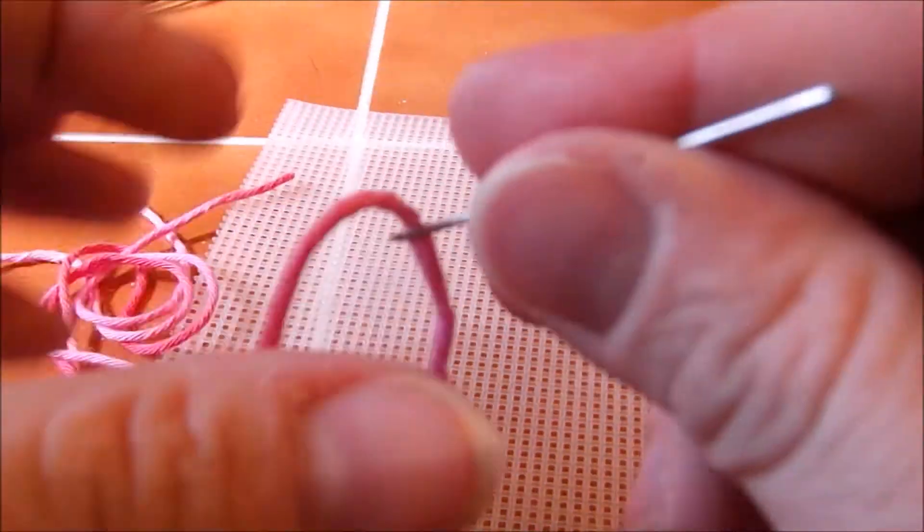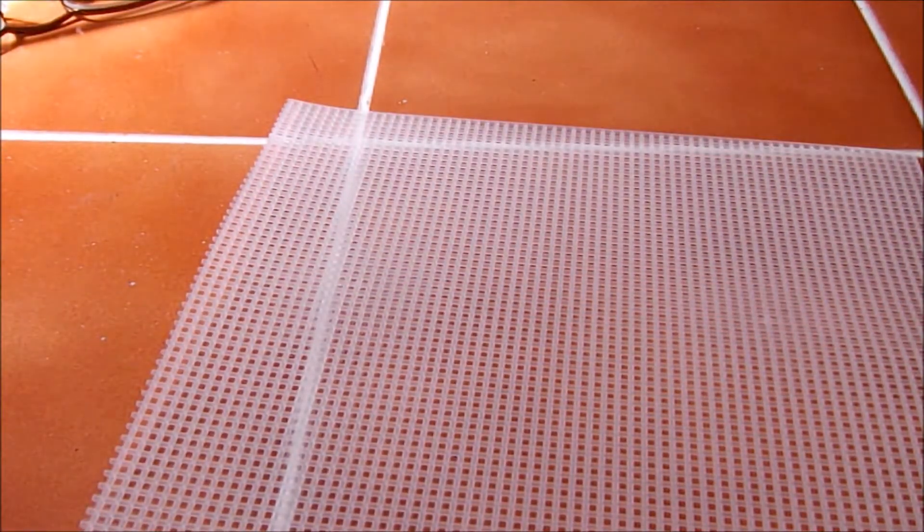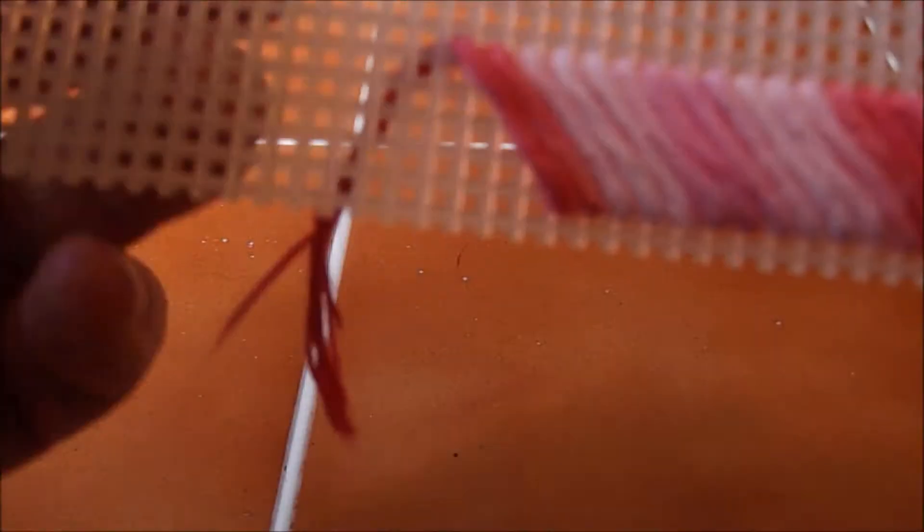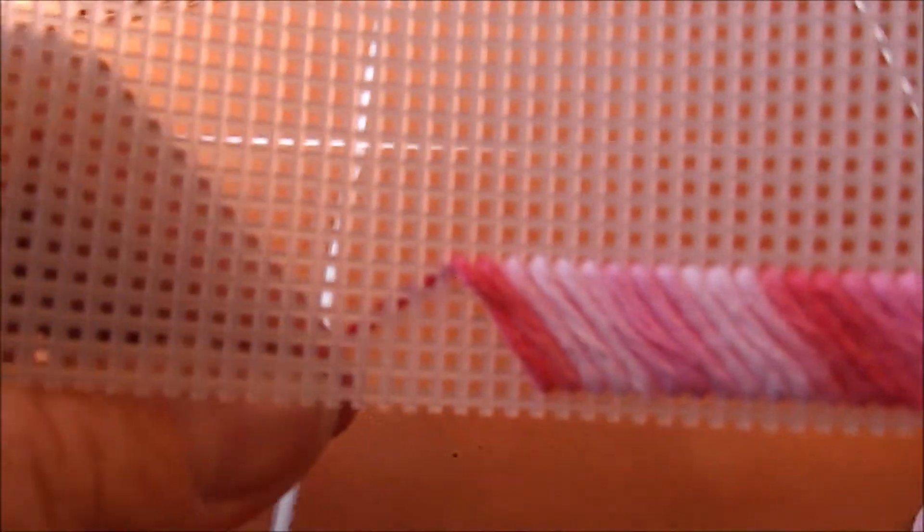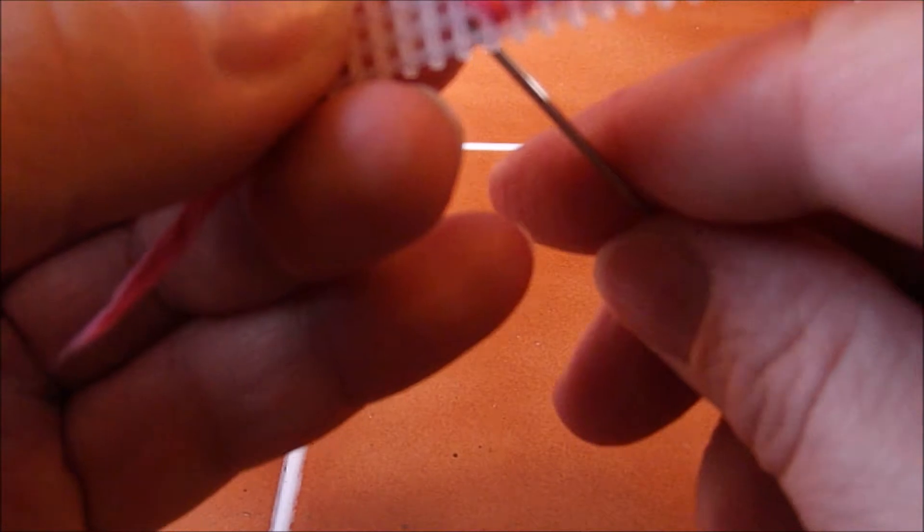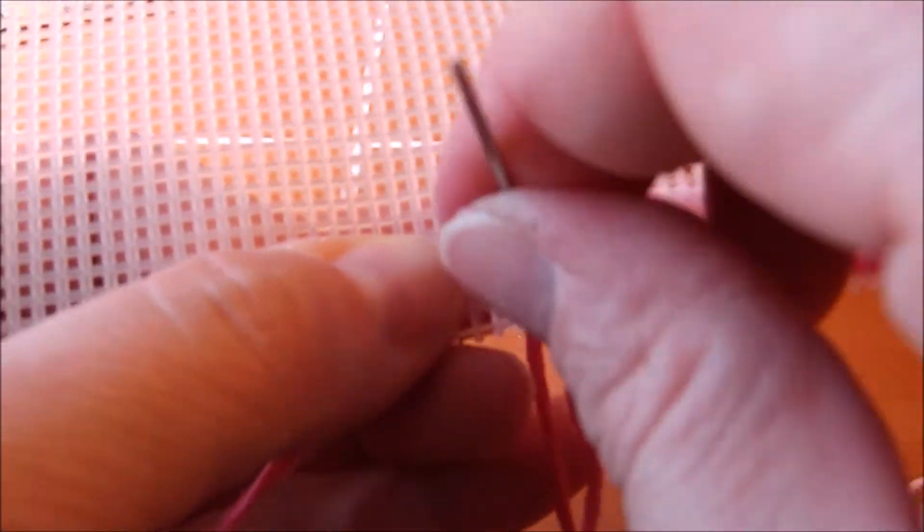All right, so thread your needle with the new piece. And then make sure your tail is on the back. Go ahead and start where you would have normally been coming up.